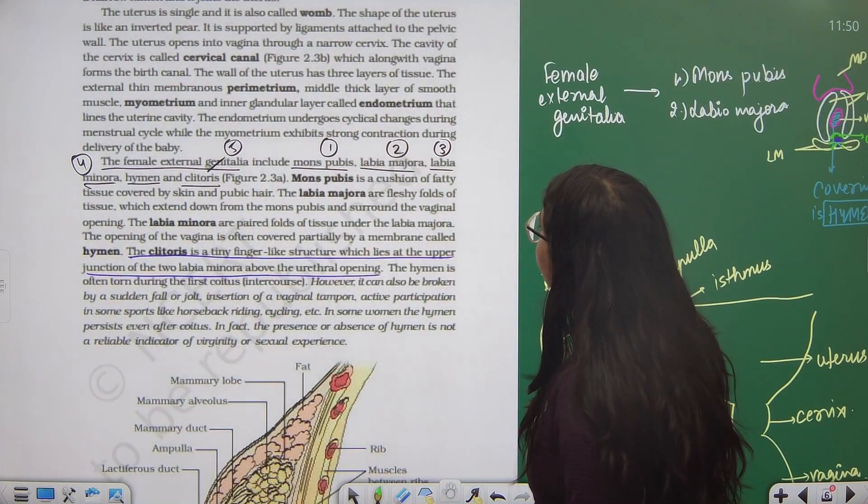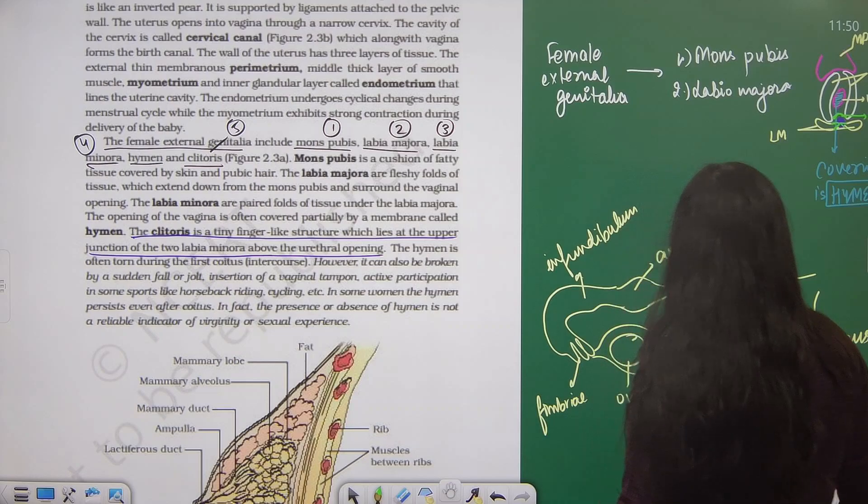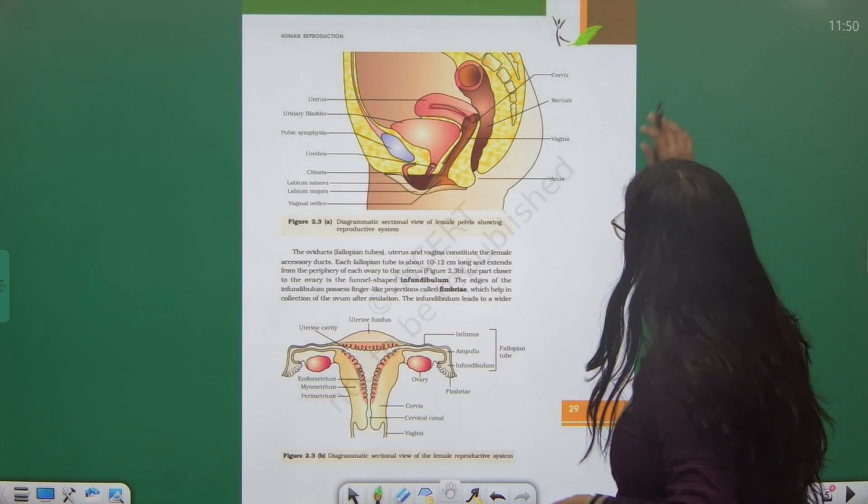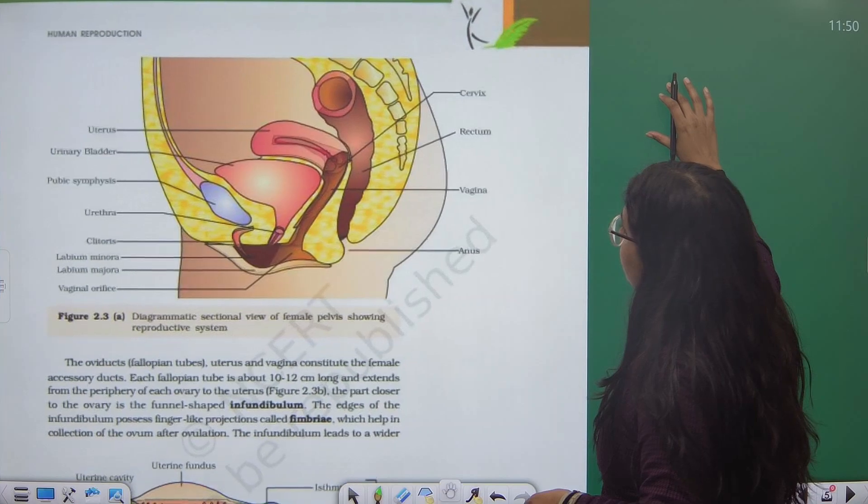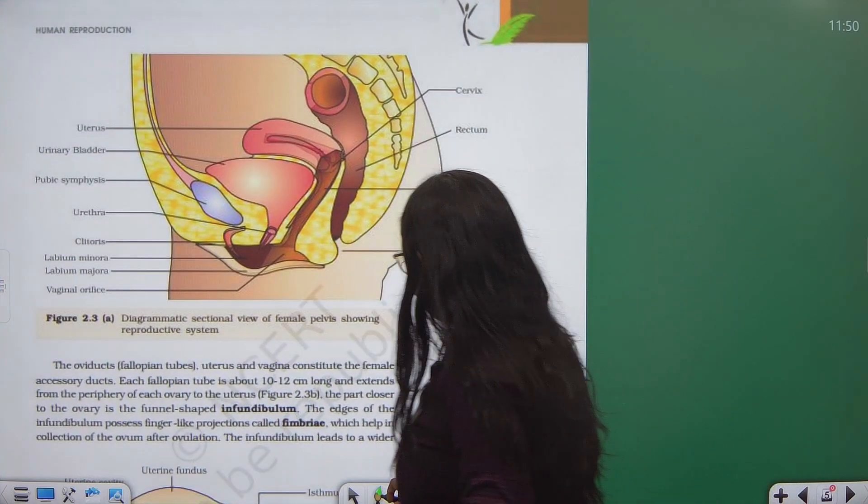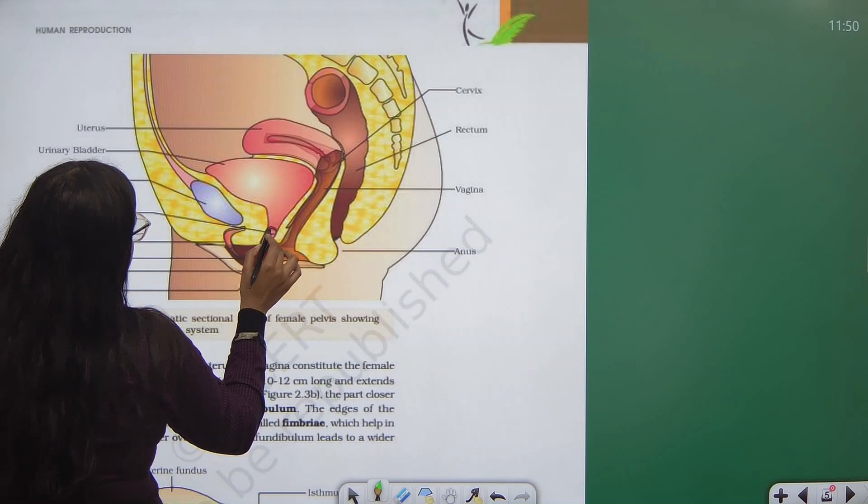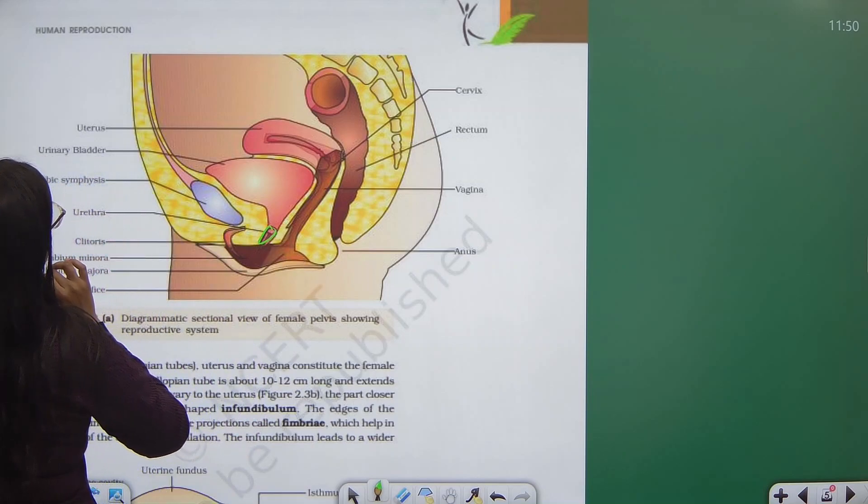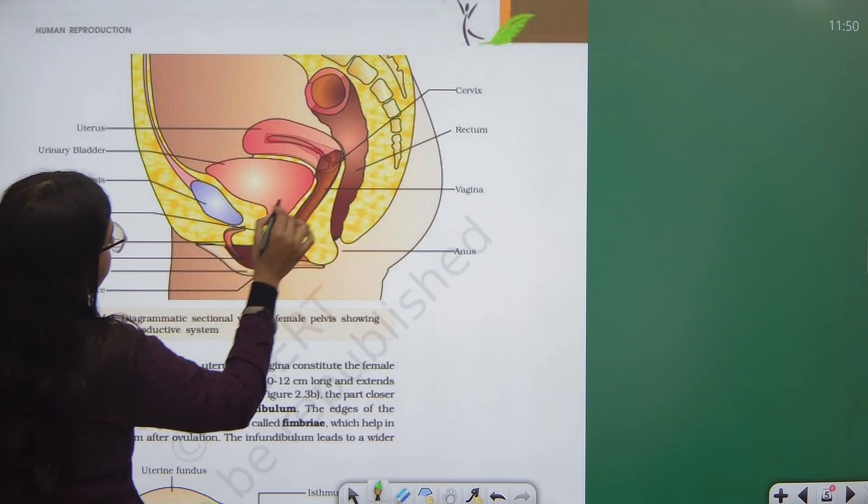You can see over here, I will see if we have the structure. Yes, this is the structure. If you see carefully, this is the urethral opening and this is the vaginal opening.